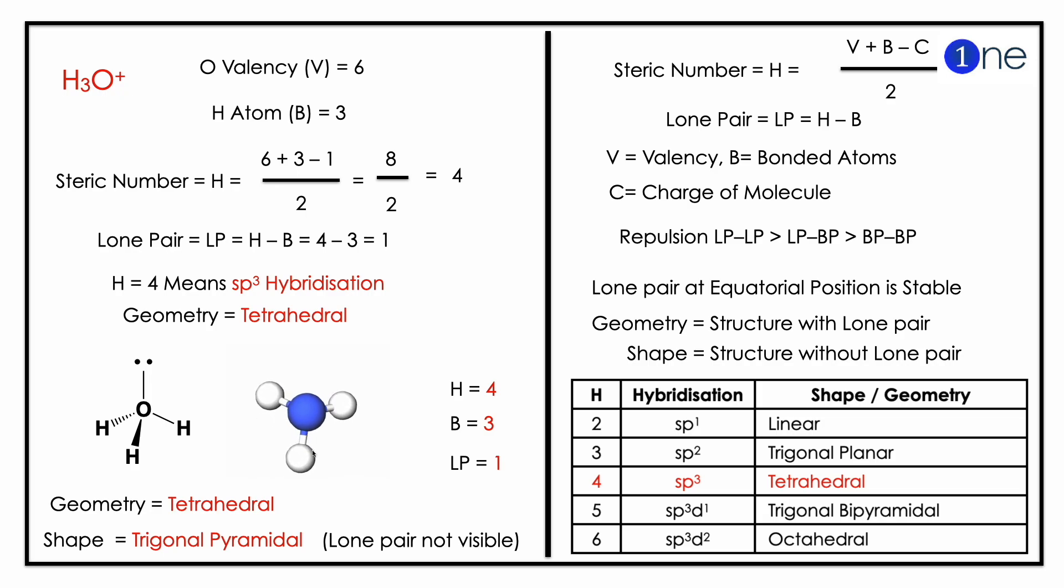So sp3 hybridization with one lone pair. So geometry is tetrahedral with one lone pair, meaning you will have trigonal pyramidal structure. Lone pair is small, it is not visible. Our structure is trigonal pyramidal.